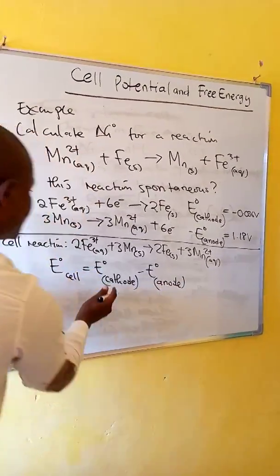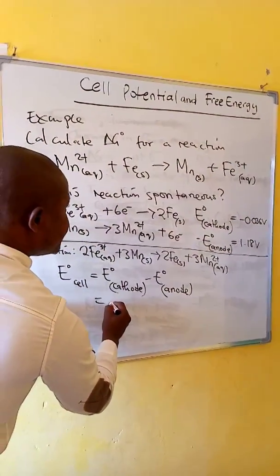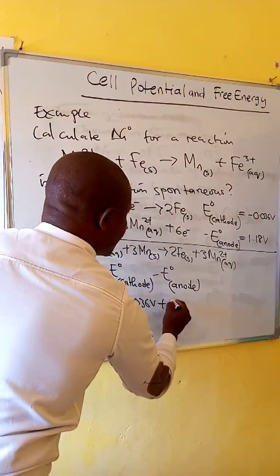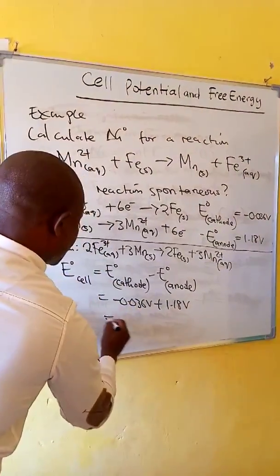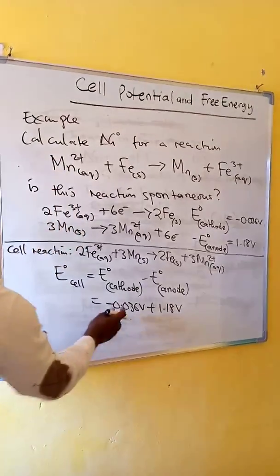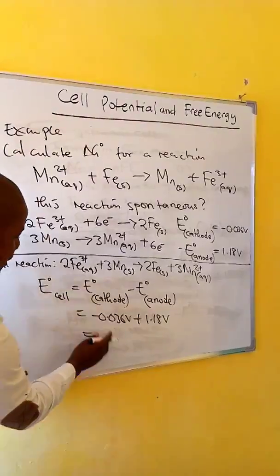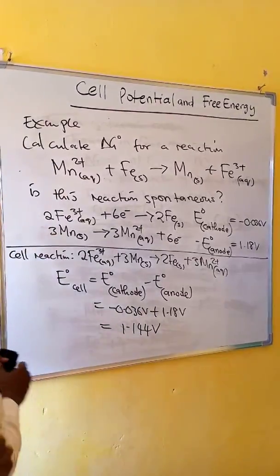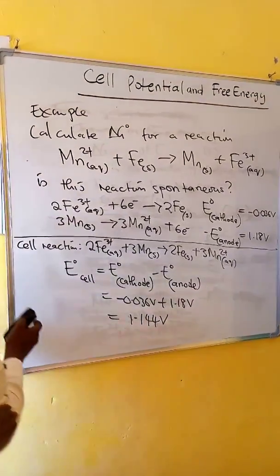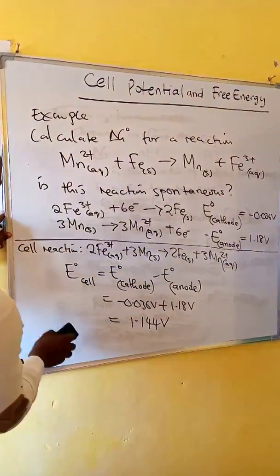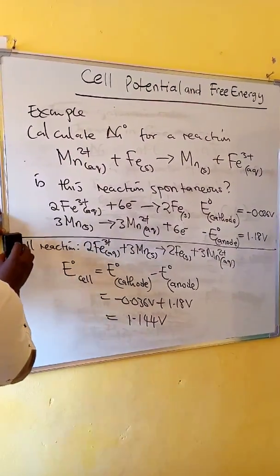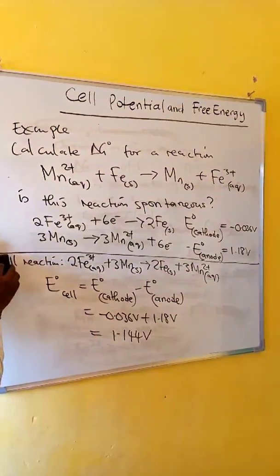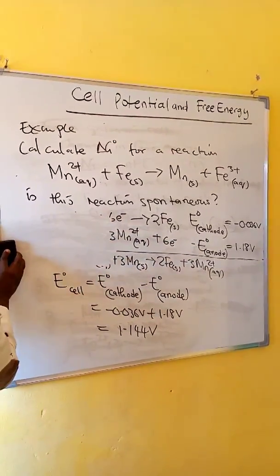We now calculate the standard cell potential. In this case we have negative 0.036 volts plus 1.18 volts. When we do the arithmetic we get 1.14 volts. This is the standard cell potential for the reaction. We now use this standard cell potential to calculate the free energy.